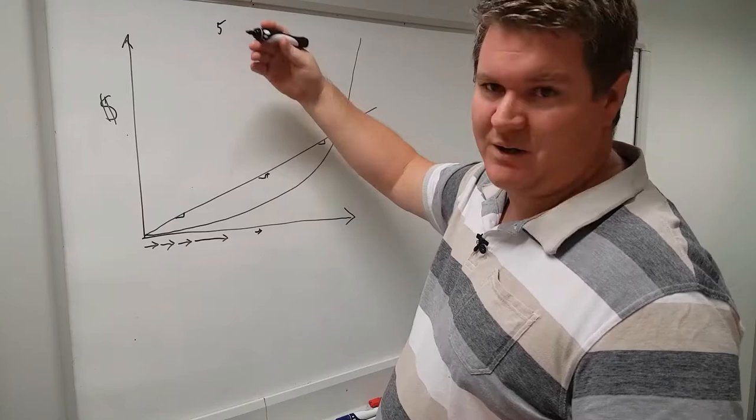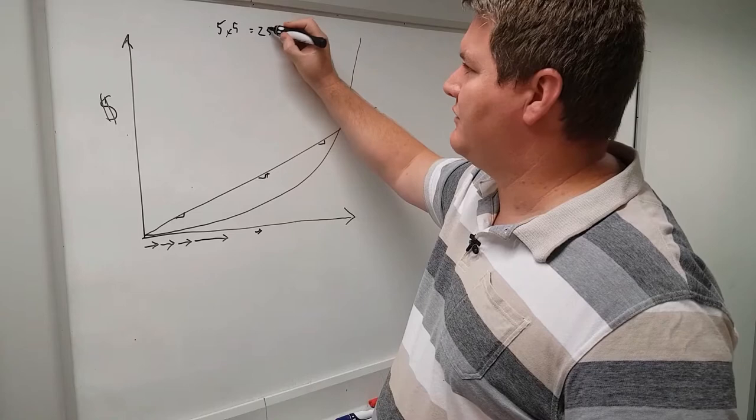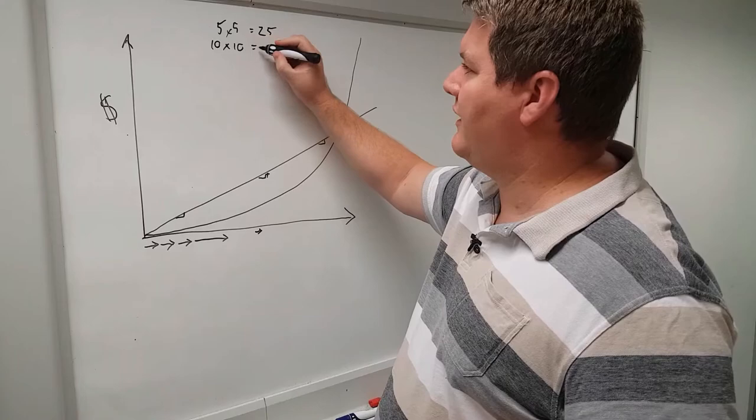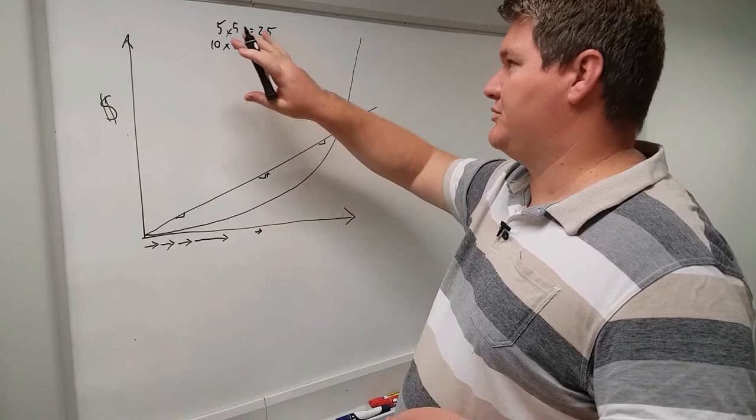So somebody upvotes to the value of 5, that 5 would be times by itself, and you get 25. Somebody with 10 has twice as much voting power, but they have four times as much influence over the payout figure.